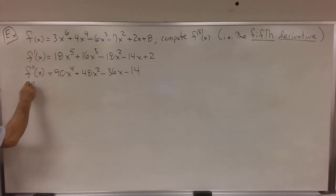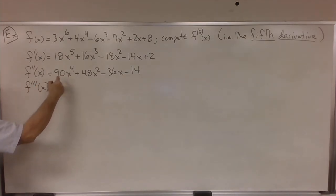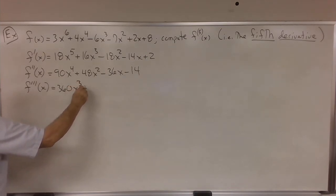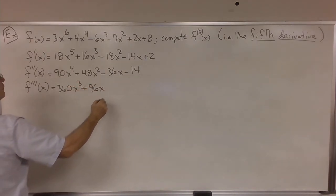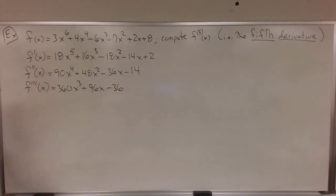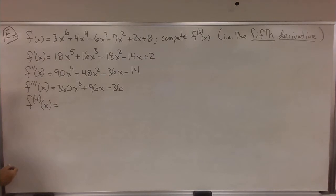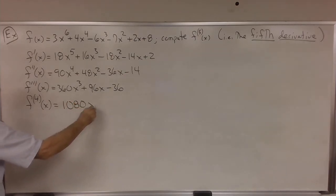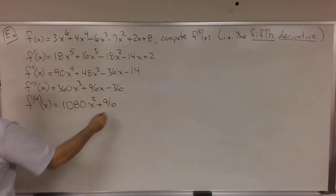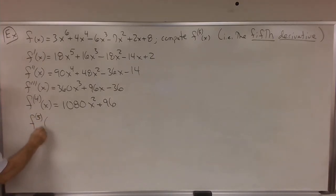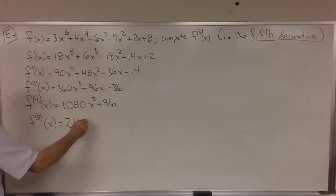And the third derivative: 360x cubed plus 96x minus 36. Okay, here I change my style of notation — this means fourth derivative. And 360 times 3, I'm guessing that's 1080, x squared plus 96. And f to the fifth, the fifth derivative of f of x: 2160x.